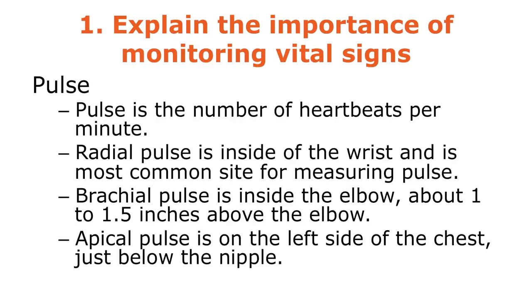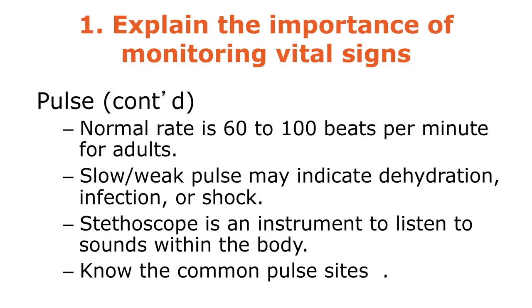Moving on to pulse — pulse is the number of heartbeats per minute. The radial pulse is inside the wrist and is the most common site for measuring pulse. The brachial pulse is about one to one-and-a-half inches above the elbow. The apical pulse is on the left side of the chest, just below the nipple.